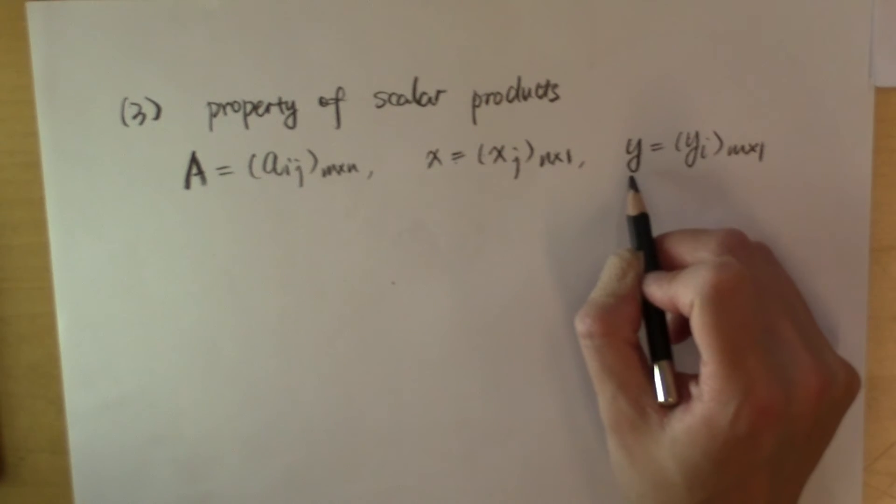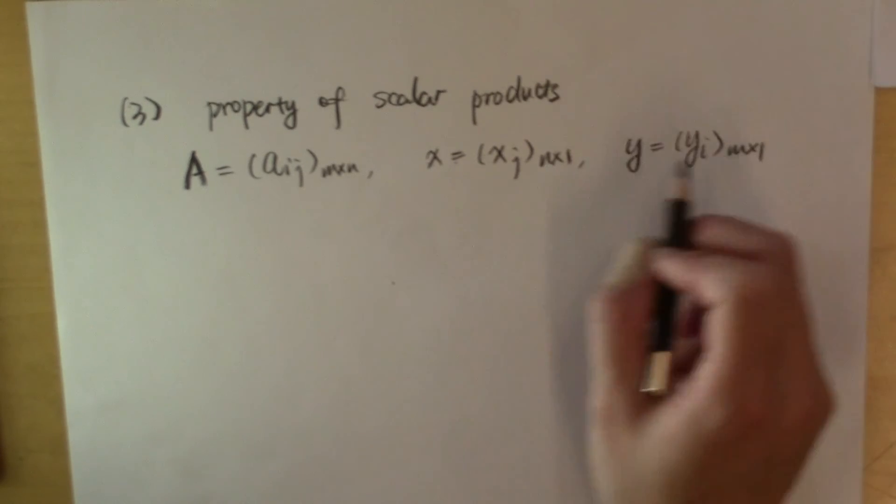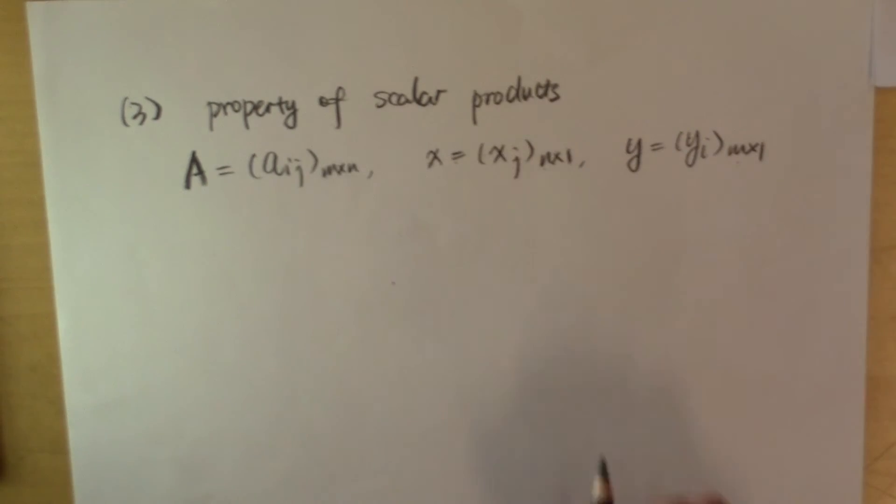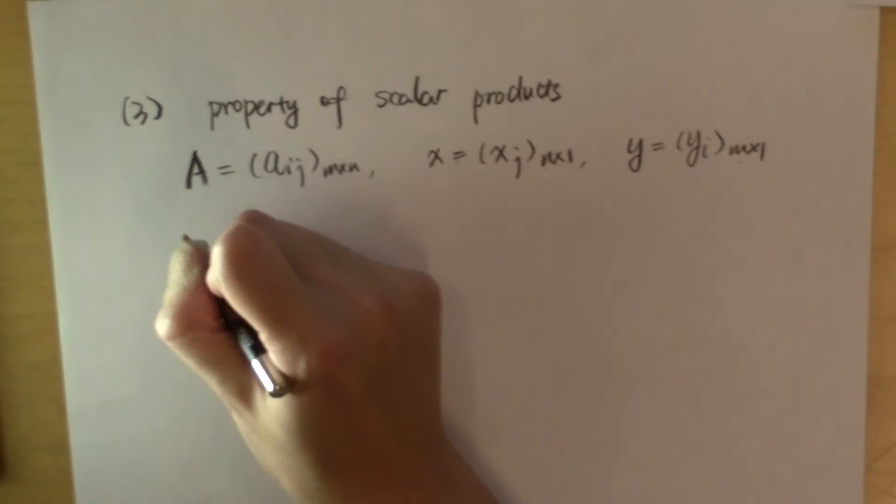let's add another vector Y that is of dimension M by 1. So this M equals this M, this N equals this N for the dimensions to match for matrix multiplications. And now let me ask you,